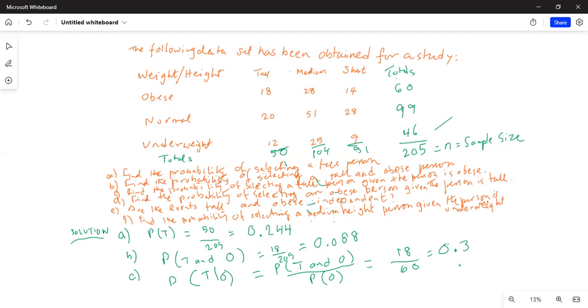So total of the obese row is 60. That happened first. That goes in the denominator. Out of which, how many are obese? 18. 18 out of 60 is 0.3.